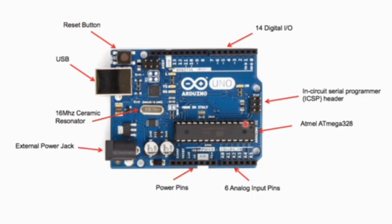The microcontroller's name is ATmega328P — this is the microcontroller of the board. This is the hardware part, and when we do programming and coding, we process it through this microcontroller. Through this, we control the entire Arduino board. You can say this is the CPU of the whole circuit.